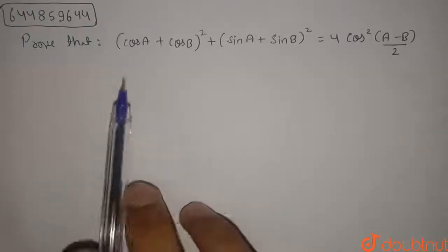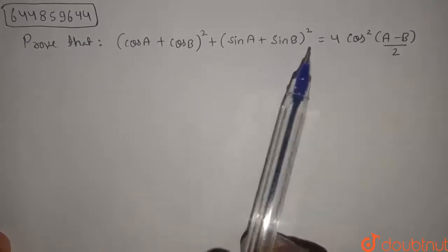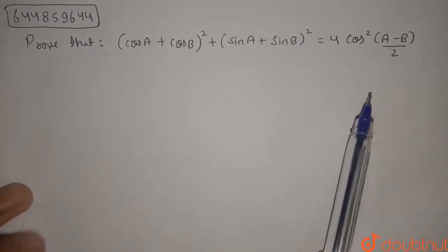Hello friends, so we have to prove that (cos A + cos B)² + (sin A + sin B)² is equal to 4 cos²((A-B)/2).